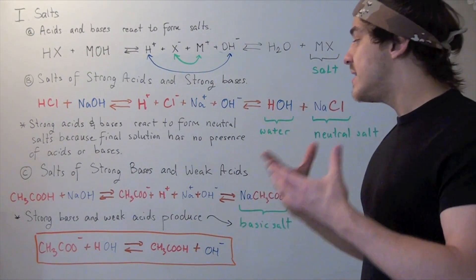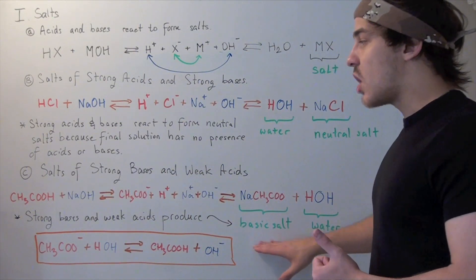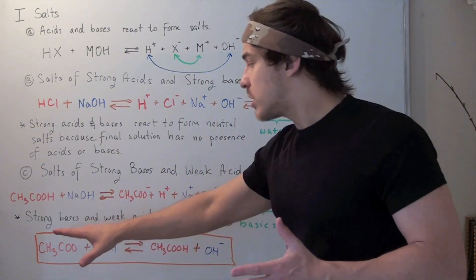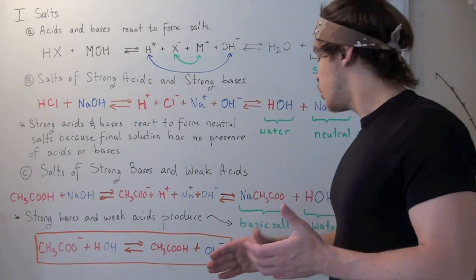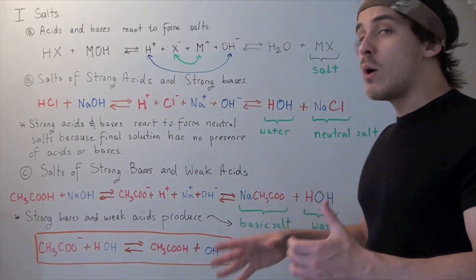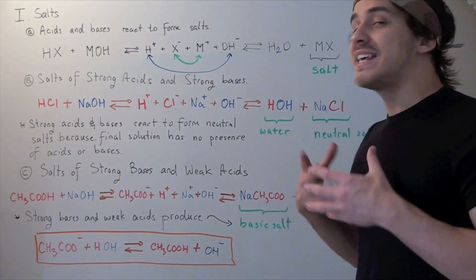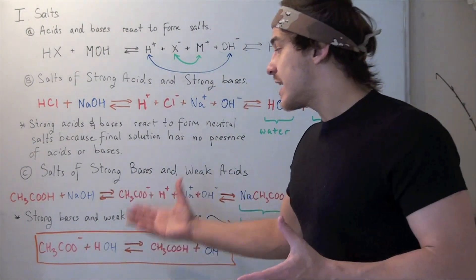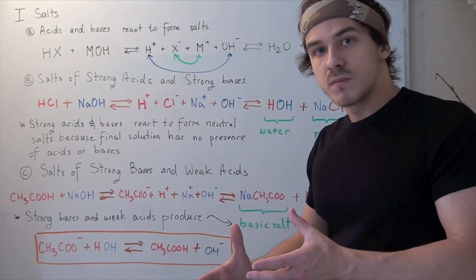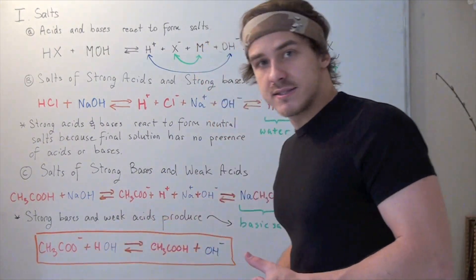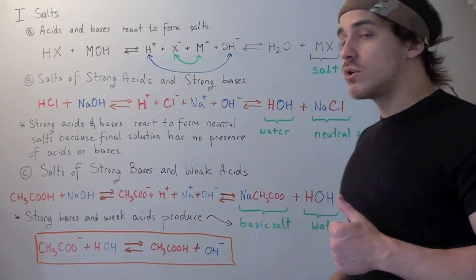Because we have a basic solution, we get a basic salt. Any time strong bases react with weak acids, we produce basic salts. How basic the salt is depends on the Kb value of the reaction — the higher the Kb, the stronger the base, and the more basic the salt.